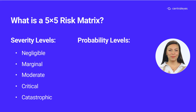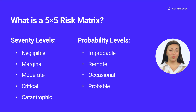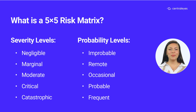Probability levels: Improbable — unlikely to occur. Remote — unlikely, though possible. Occasional — likely to occur occasionally during standard operations. Probable — not surprising, will occur in a given time. And frequent — likely to occur and to be expected.